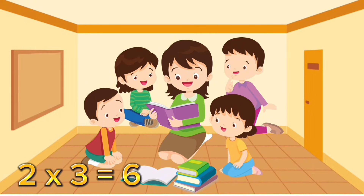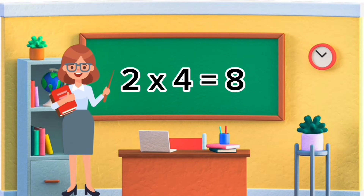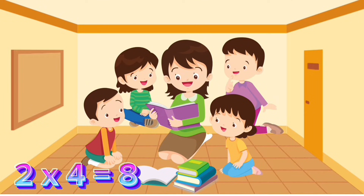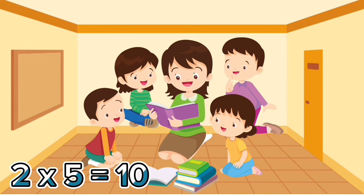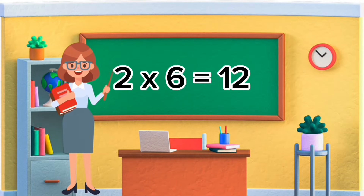Two threes are six. Two threes are six. Two fours are eight. Two fives are ten. Two sixes are twelve.